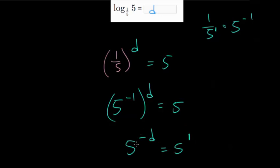So 5 to the minus d is equal to 5. And I'll write this to the first power. Since now they have the same base, and for this to be true, their exponents have to be equal. So we can conclude that negative d is equal to 1. Or if I multiply or divide everything by negative 1, then d is negative 1.